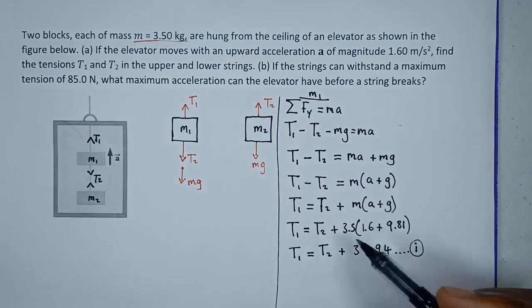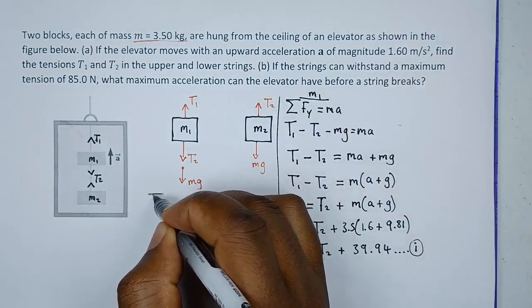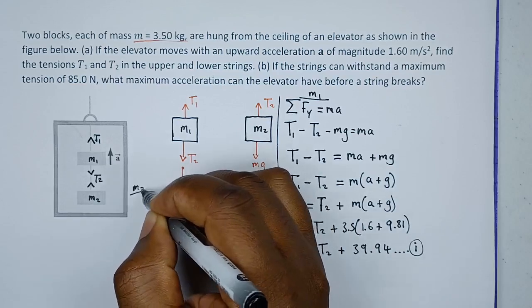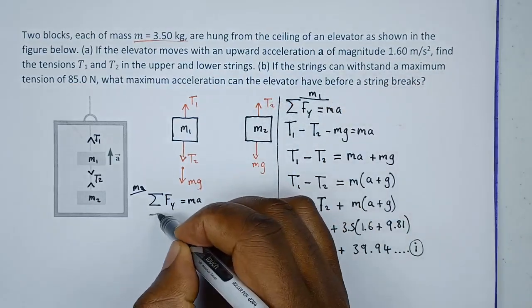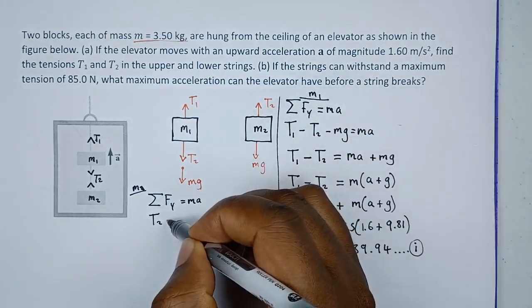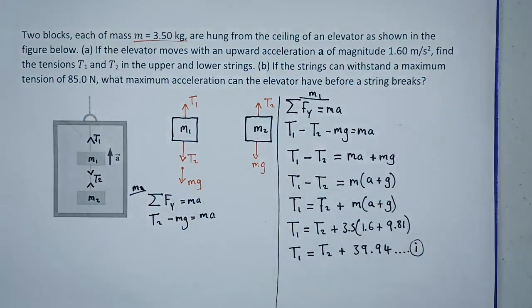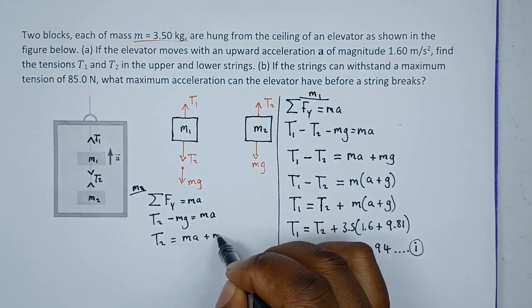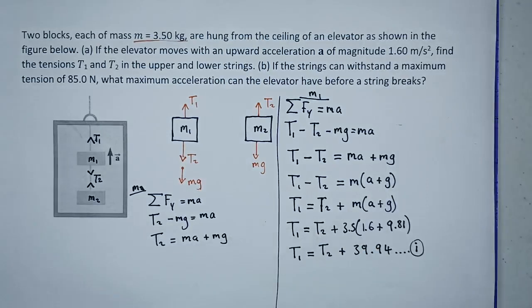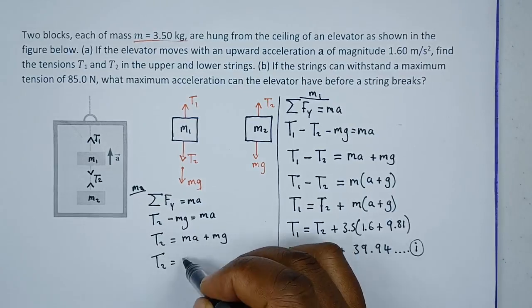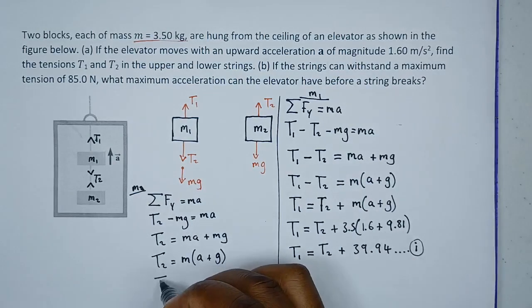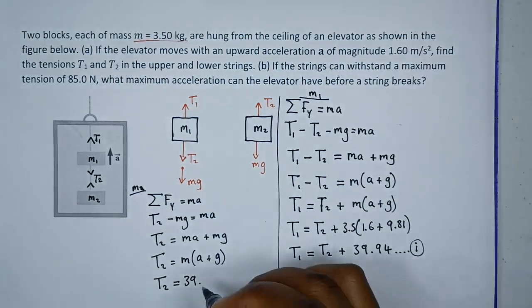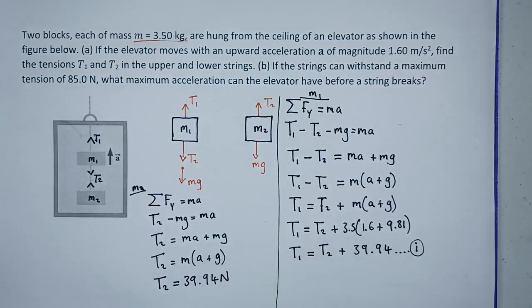Now for equation two, summing forces for object M2 in the y-axis: T2 - mg = ma. Making T2 the subject: T2 = m(a + g). We can factor out the mass to get T2 = m(a + g), which gives the same expression. So T2 = 39.94 newtons.